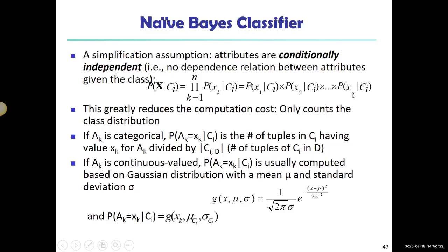With the conditional independence assumption, we can simplify the joint probability P(X | C_i) to a simple product of all individual attribute probabilities involved in the observation. We only need to count the class distribution — for each class, how many observations have a particular value for each attribute. That gives us the values for every factor in the equation.